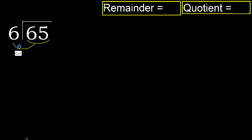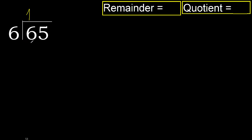65 divided by 6. 6 is not less, therefore work with 6. Here, 6 multiplied by which number is nearest to 6 but not greater? 6 multiplied by 2 is 12 — 12 is greater. Multiplied by 1 is 6. Ok, 6 is not greater, so subtract.